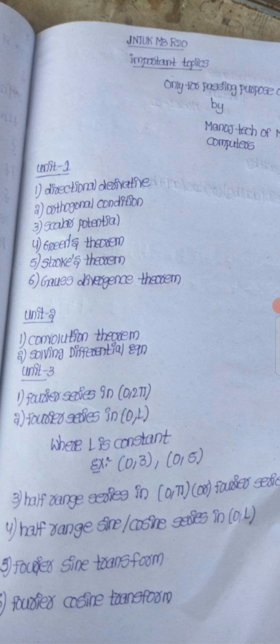If we complete the formula, we complete the formula for the Fourier series. Then we complete the formula for the 0 to 2π interval.